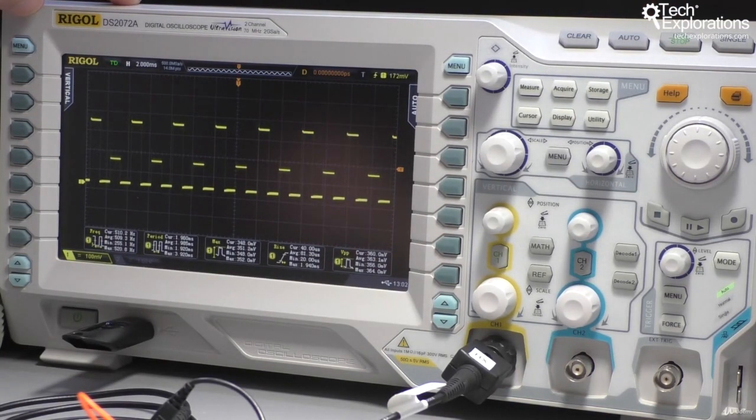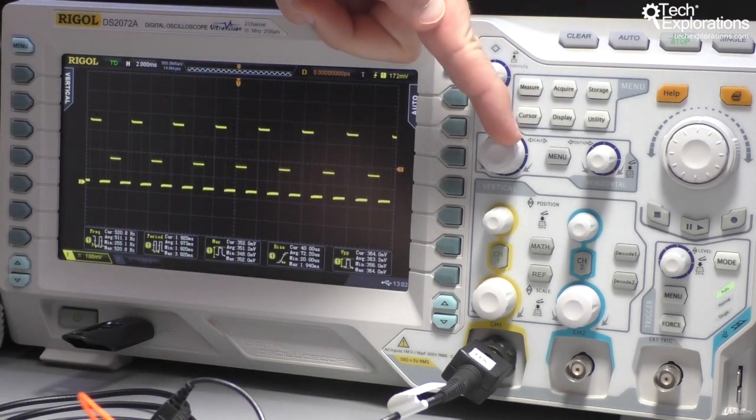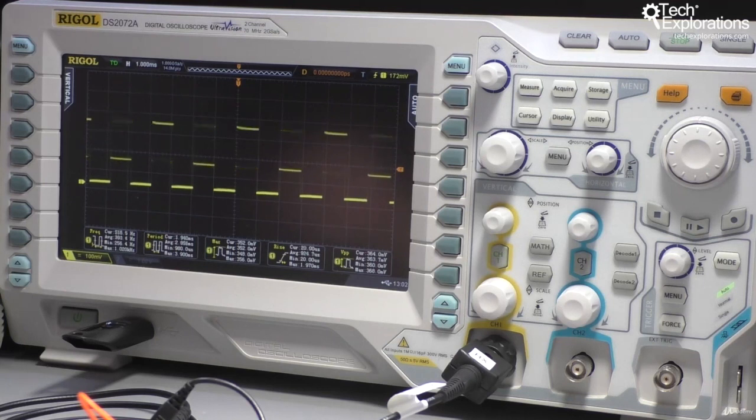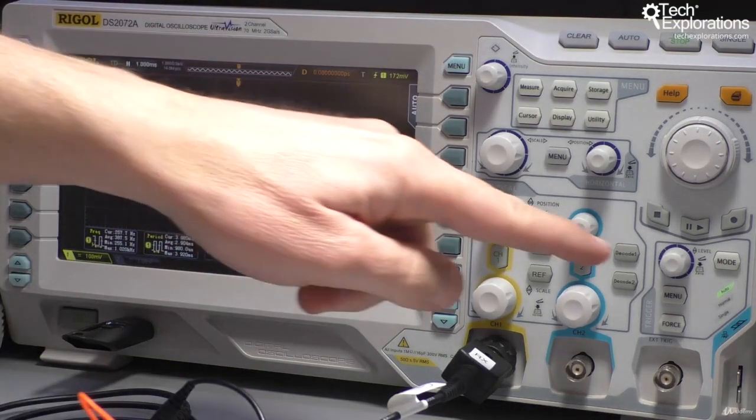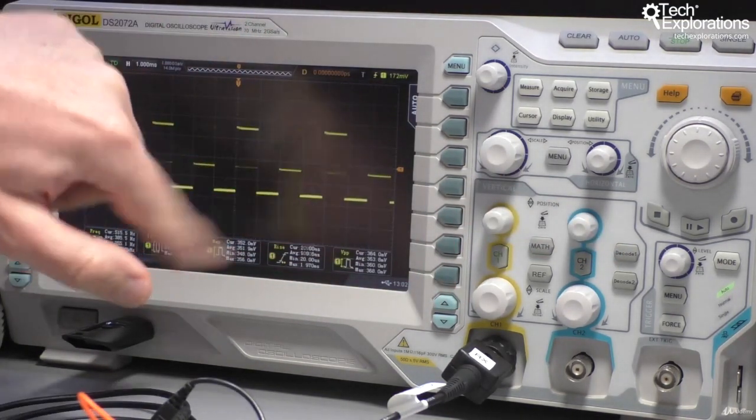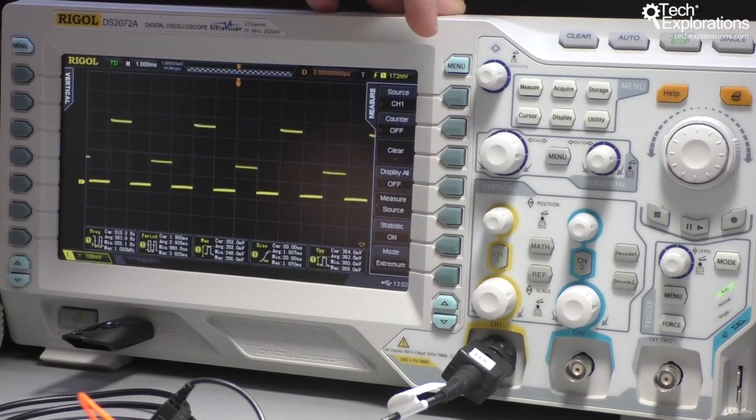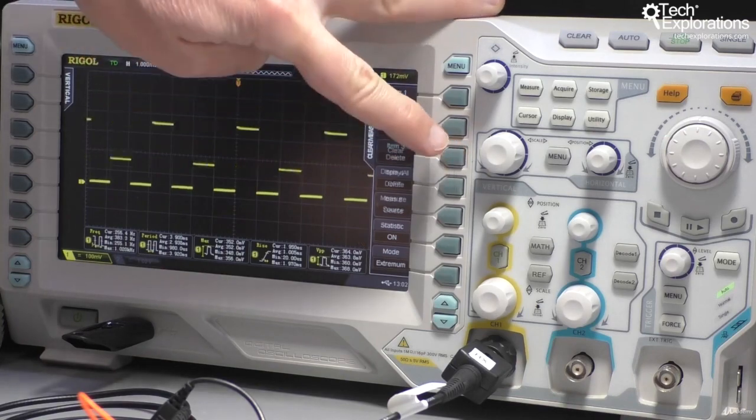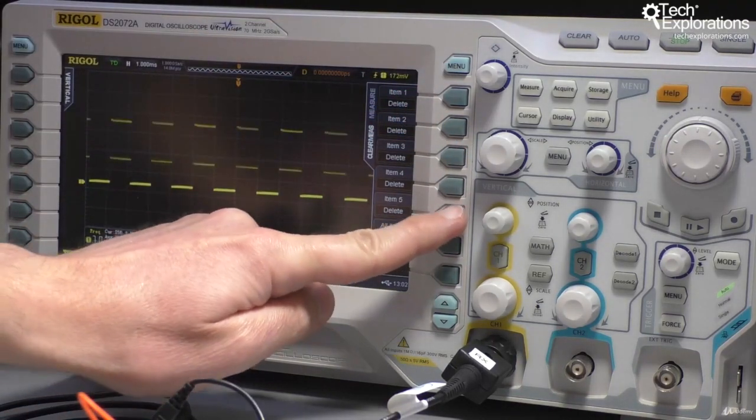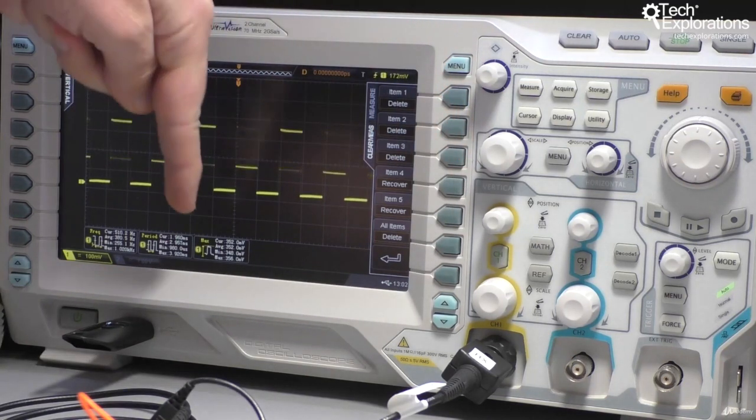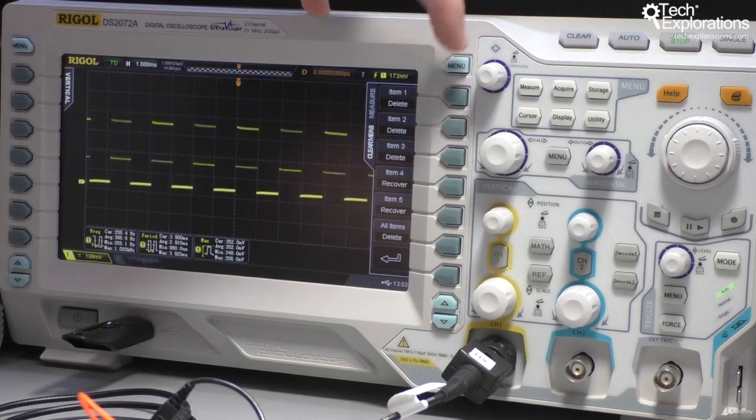So back to run mode and let's change the timescale to this so that we've got an unstable waveform on the screen. Now before I fiddle around with the trigger, I just want to remove a couple of these statistics down there. Very useful but also perhaps distracting. So I'm going to clear item 5, item 4, and keep the other three.